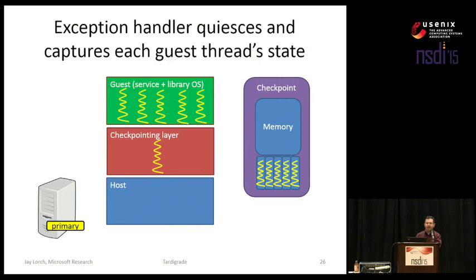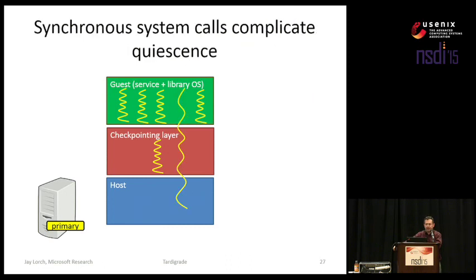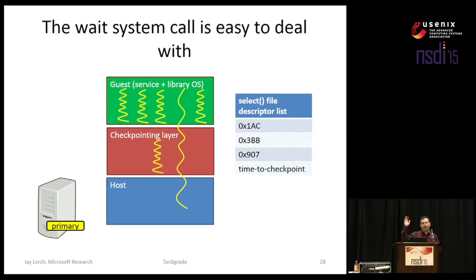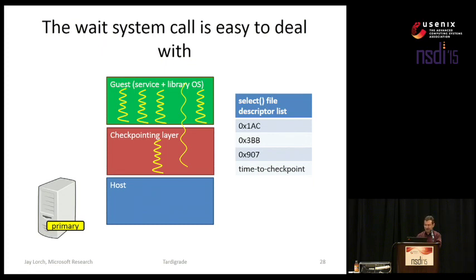One complication is synchronous system calls that may run for a long time. If a guest is in the middle of such a call, it is not interruptible. The common case API call we expect in any LVM API is wait — select, wait on a list of file descriptors. Our position as an interpositioner allows us to add an additional file descriptor to each of these lists, waiting for all those things plus a special event saying it's time to checkpoint. When it's time to checkpoint, we signal this event; all the waits return into the checkpointing layer where we stop them, pause the threads, capture their states, and then resume the waits after the checkpoint is complete.